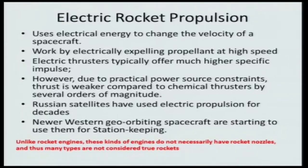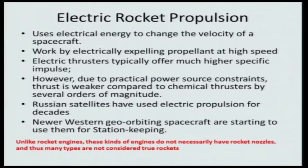What is electric rocket propulsion? Electric rocket propulsion uses electrical energy to change the velocity of a spacecraft. That is the basic premise of electric propulsion. The work done in these systems is electrically expelling the propellant at very high speed. In the chemical rocket, it is essentially the conversion of chemical energy into kinetic energy, but here the conversion to kinetic energy is done electrically. Electric energy is converted into kinetic energy, and electric thrusters typically offer much higher specific impulse compared to chemical rockets, because the velocity produced by these devices is much higher.